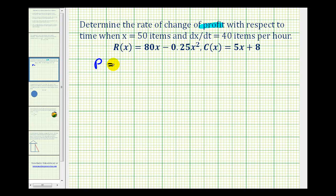The profit equation is going to be equal to the revenue equation minus the cost equation. So the profit function is going to be negative 0.25x² and then we have 80x minus 5x, that's 75x, and then we'd have minus 8.